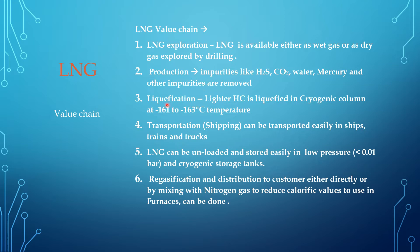Then the gas is sent to the distillation section, where methane and ethane are separated and sent to liquefaction. The third step is liquefaction — lighter hydrocarbons from the deethanizer are sent to a liquefied cryogenic column, where they are liquefied at minus 161 to minus 163 degrees centigrade, and LNG is produced.